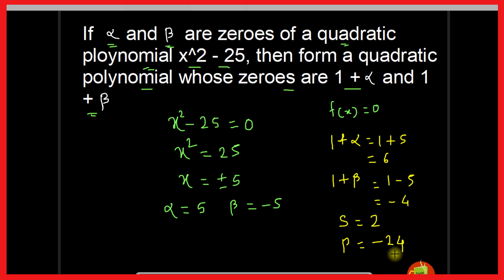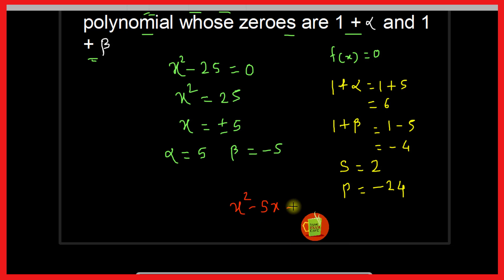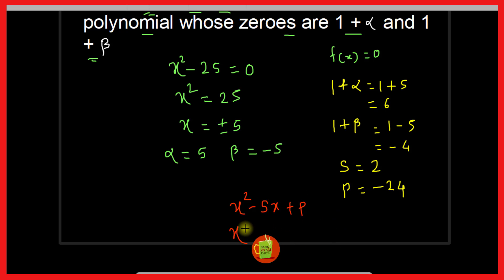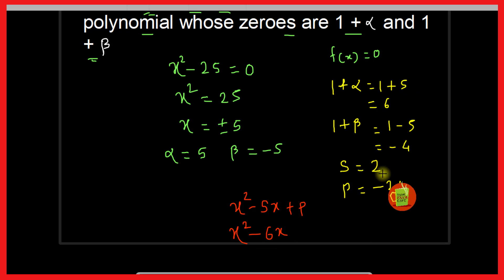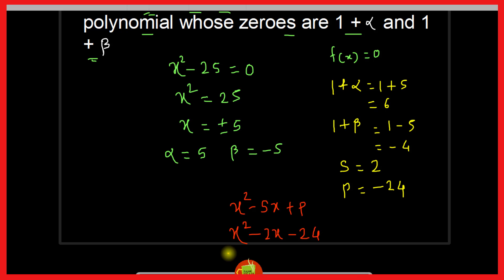The product of the roots equals 6 times minus 4, which is minus 24. So we have the sum of the roots and the product of the roots of the new polynomial. From this, we can write the quadratic polynomial as x squared minus s·x plus p, where s is the sum and p is the product. Therefore, the required polynomial is x squared minus 2x minus 24.